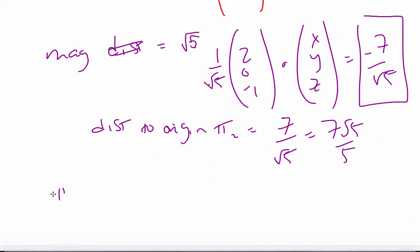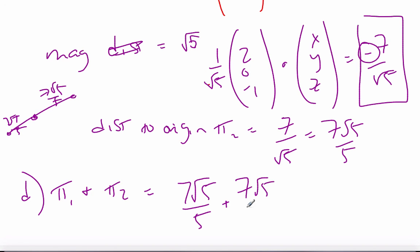The distance between plane 1 and plane 2 is going to be, well, one side is 7 root 5 over 5. That's, here's the origin. Here's 7 root 5 over 5. And the other one is on the other side of the origin, which is also 7 root 5 over 5. And I know that because this value is negative. And so when I add these two fractions up, I get 14 root 5 over 5 is the distance between the two planes.